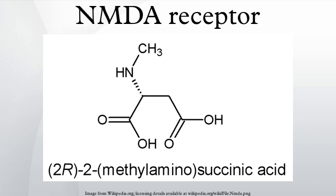A property of the NMDA receptor is its voltage-dependent activation, a result of ion channel block by extracellular Mg2+ and Zn2+ ions. This allows the flow of Na+ and small amounts of Ca2+ ions into the cell and K+ out of the cell to be voltage-dependent. Calcium flux through NMDA receptors is thought to be critical in synaptic plasticity, a cellular mechanism for learning and memory.